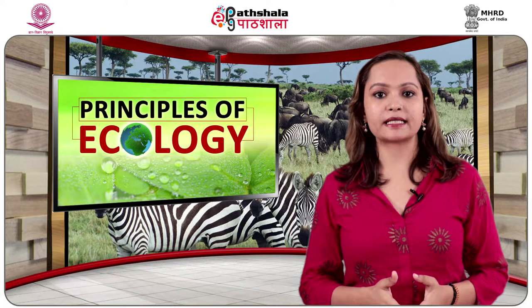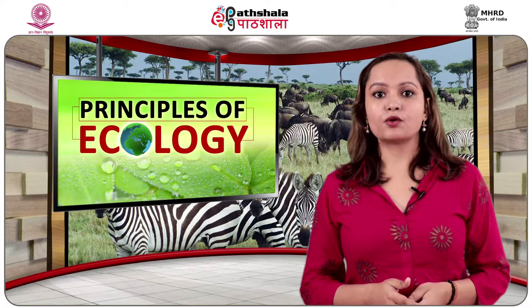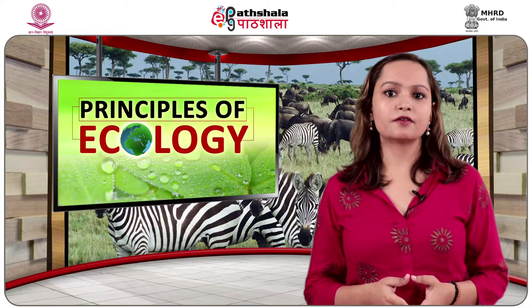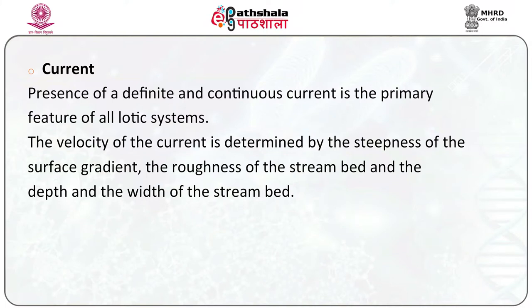Characteristics of the lotic aquatic system: the properties of rivers and streams revolve around three basic conditions. Number one, current — it is the major controlling and limiting factor in the stream. Number two, land-water interchange — it is relatively more extensive in streams, resulting in a more open ecosystem and a heterotrophic community metabolism. Number three, oxygen distribution — oxygen is generally more uniform in streams and there is little or no thermal or chemical stratification. The velocity of the current is determined by the steepness of the surface gradient, the roughness of the stream bed, and the depth and width of the stream bed.